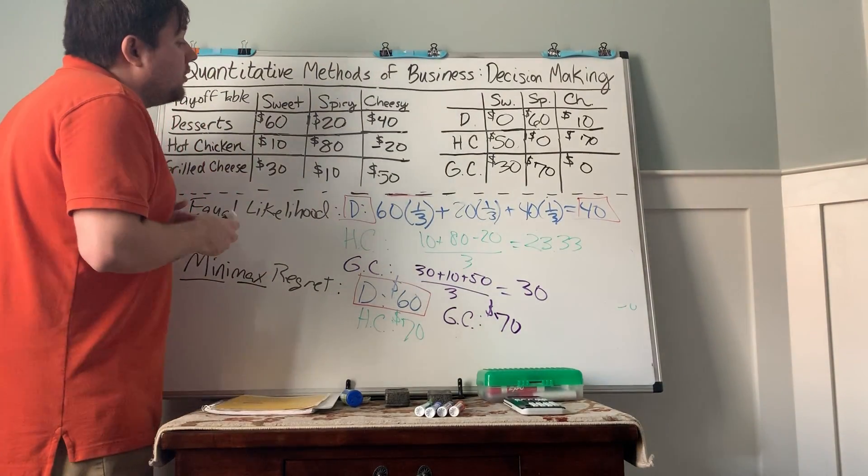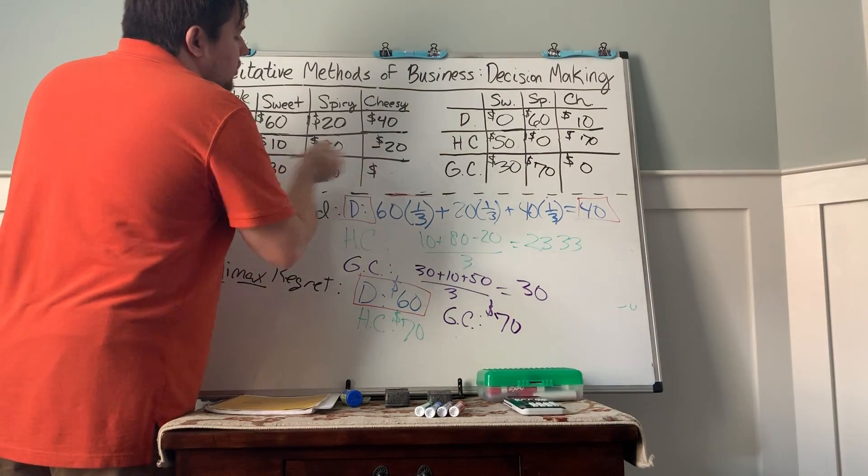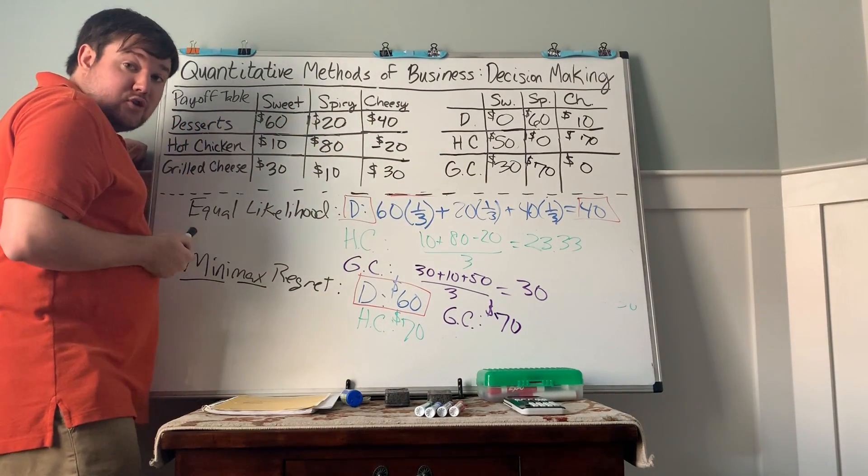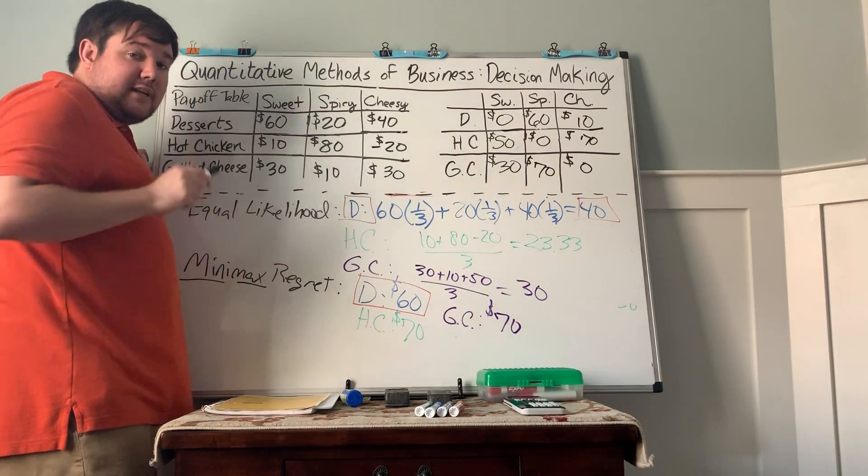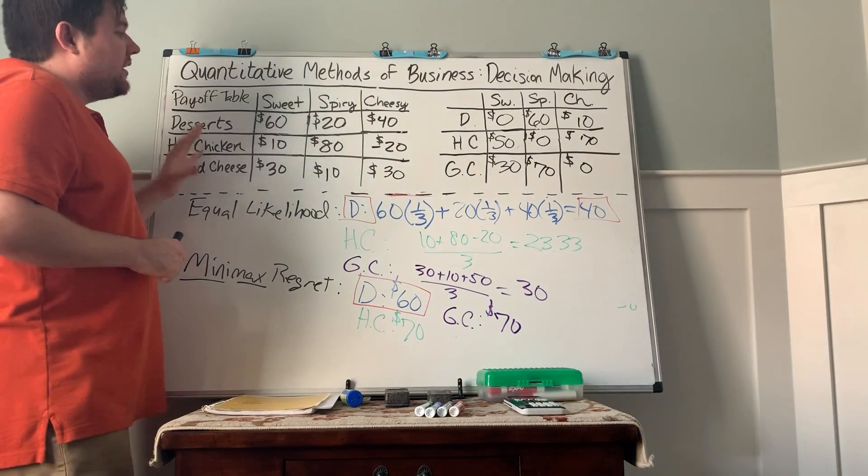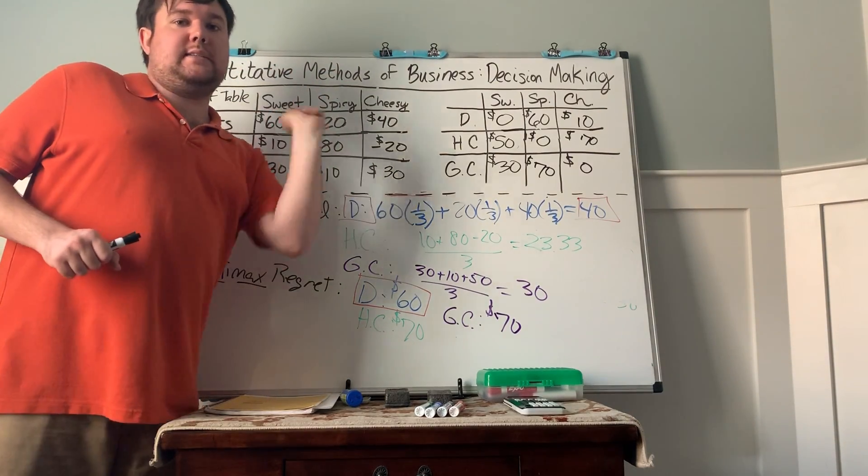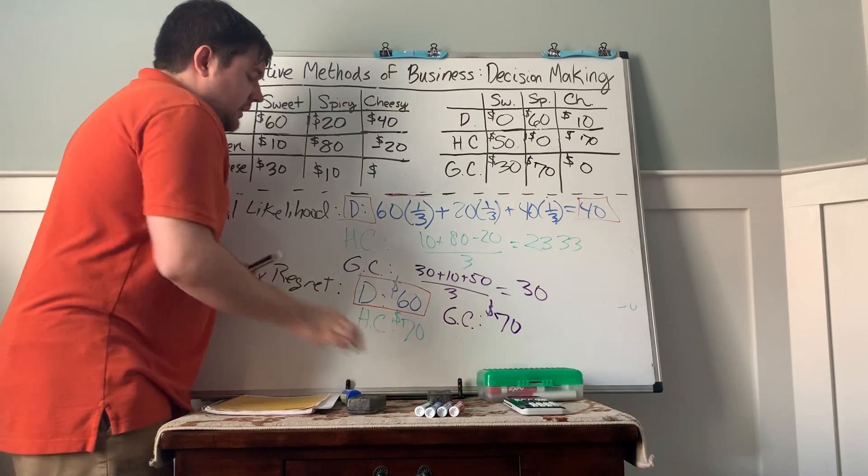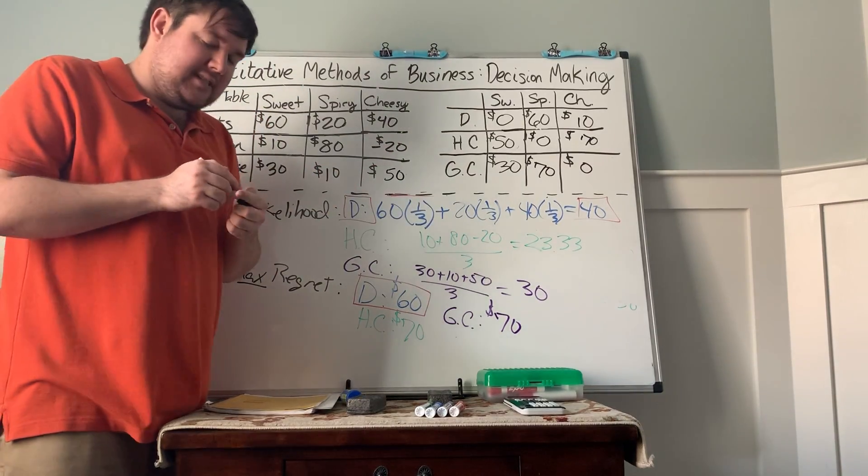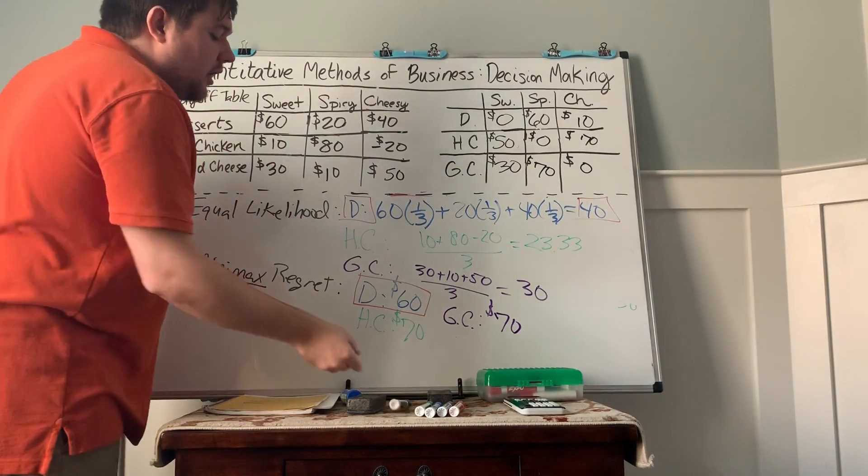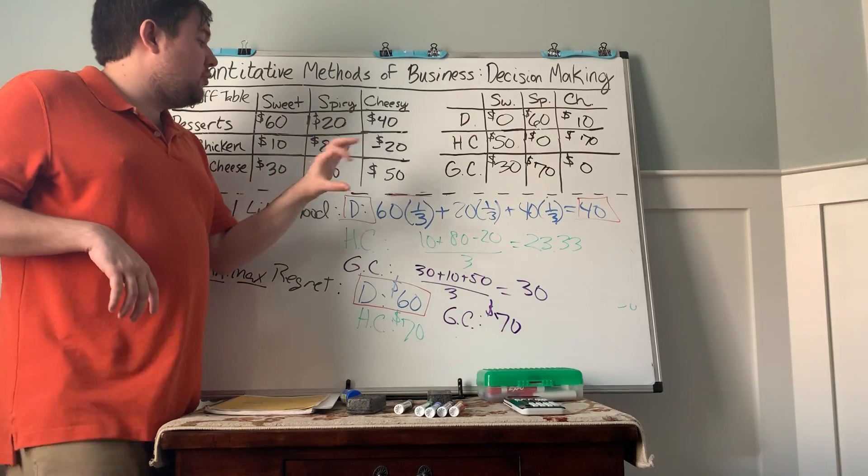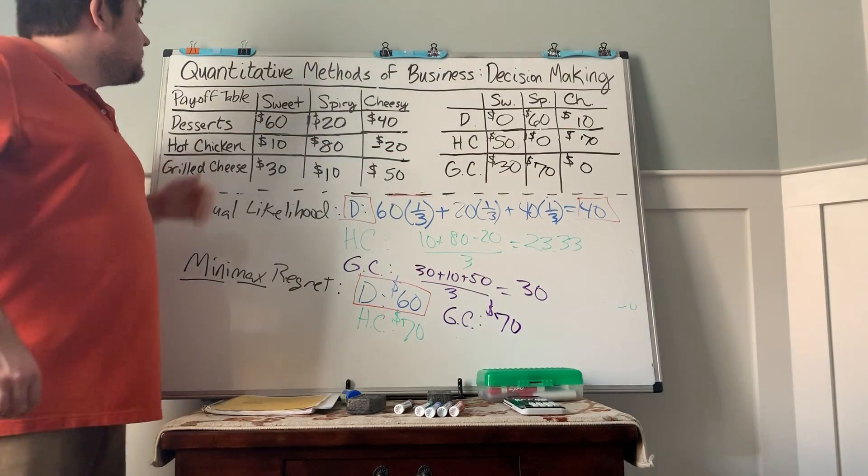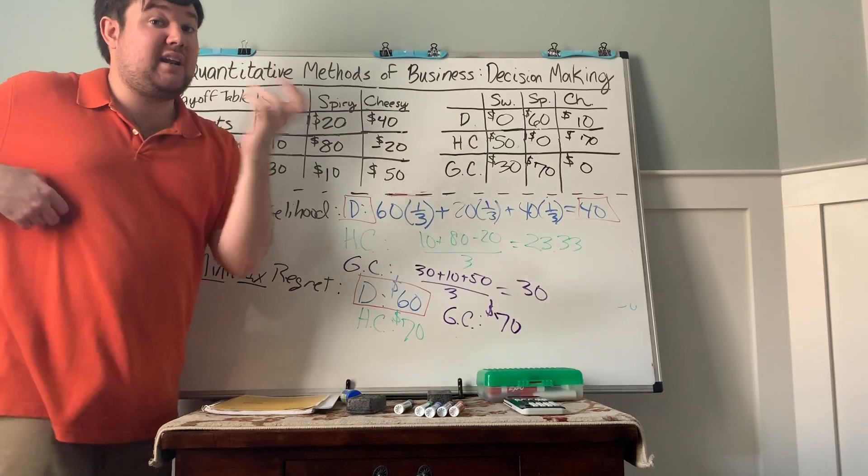Now, one thing to also look out for. Let's say instead of 50, that this one was 30. Now, notice in each scenario, desserts beats grilled cheese. In that case, we call the grilled cheese decision dominated by the dessert one. Because in any case, desserts is a better choice than grilled cheese. That is another tool in your toolbet to kind of look through because if a business venture is dominated, you can ignore it. So you don't even have to include the calculations for it at all.